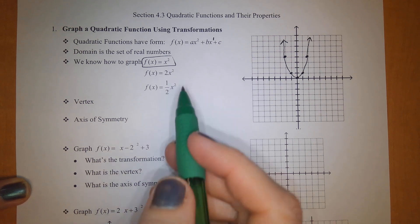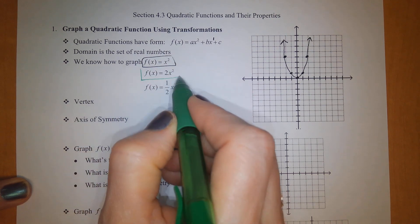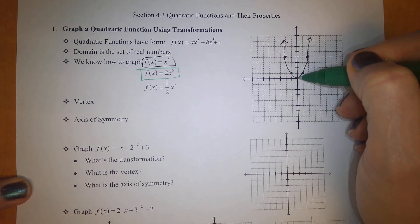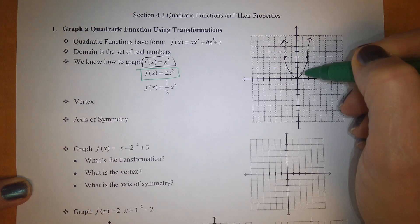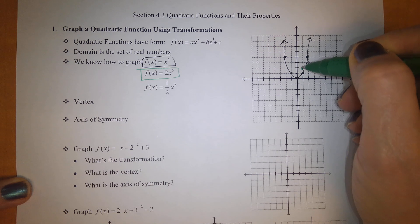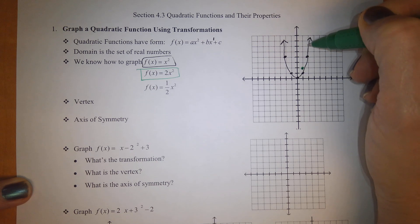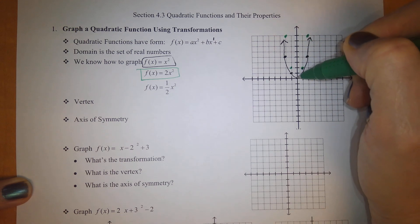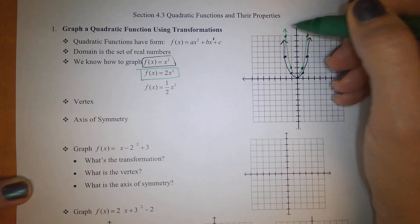We also know how to graph these other two functions. These have a vertical stretch and a vertical compression in front of the x squared. A vertical stretch of 2x squared means every point except for the anchor — which is on the x-axis — is going to be stretched by a factor of 2. So this point, instead of being at a y of 1, will have a y of 2 — it will be twice as high as before. This point, which is currently 4 high, should be 8 high total. And of course this is symmetric over the y-axis, so you can see this graph now has a stretch of a factor of 2.